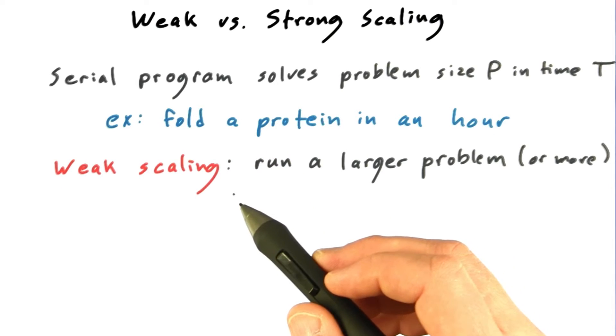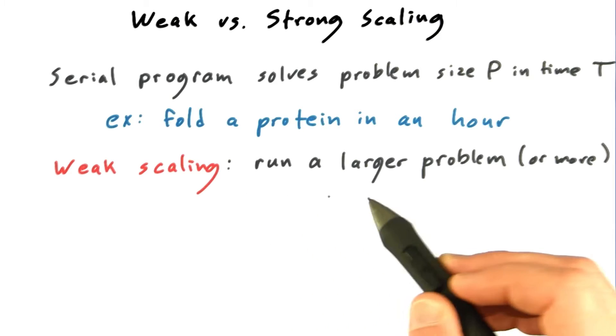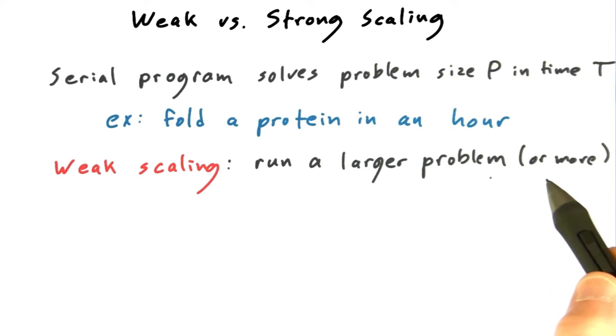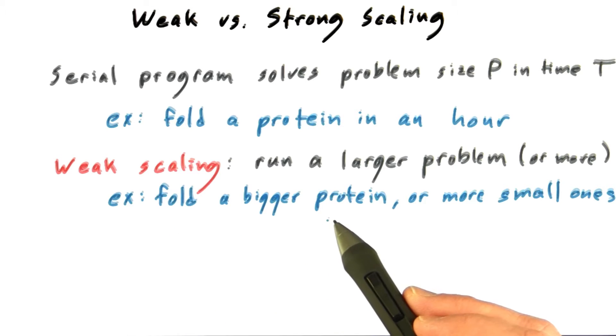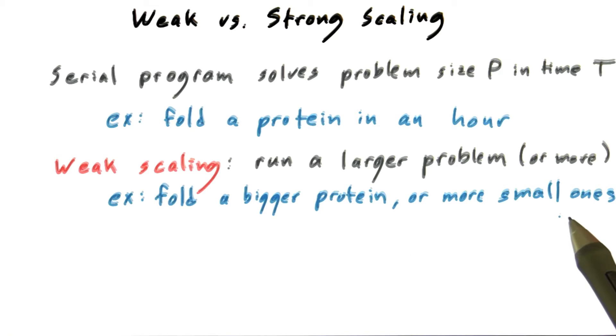Weak scaling is what we refer to when we're talking about using parallel computing to run a larger problem, or perhaps to run more problems. So if you wanted to run a bigger protein, if you wanted to fold a bigger protein in your simulation and still take an hour, or if you wanted to fold many small proteins in the same hour, then that would be an example of weak scaling.